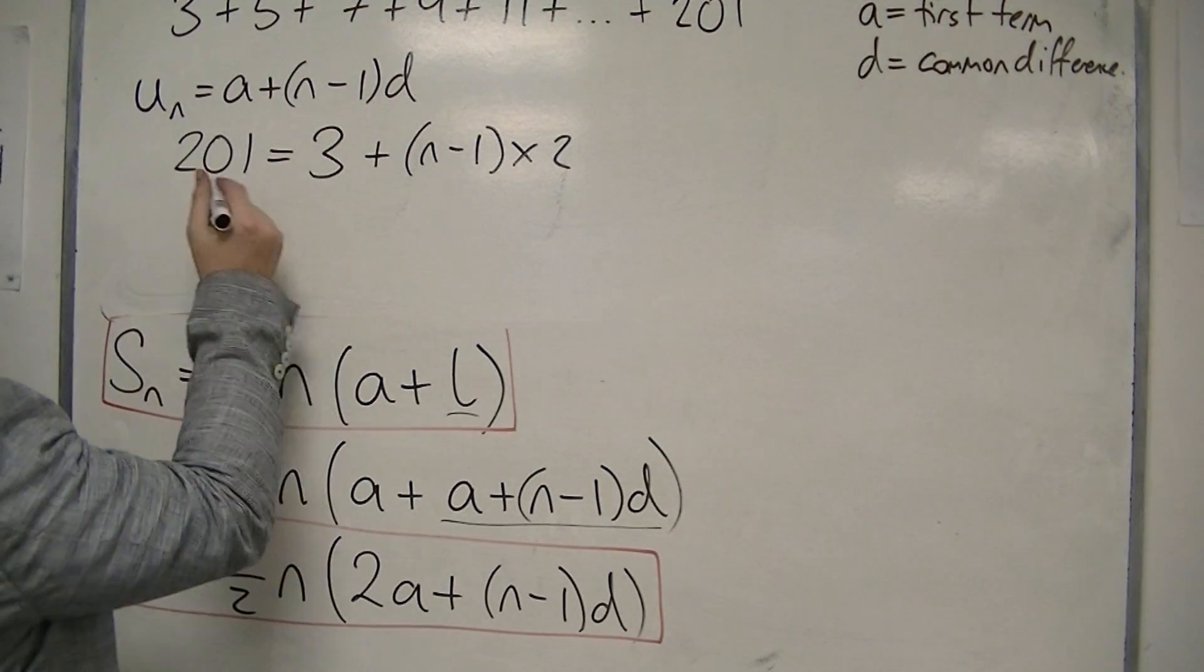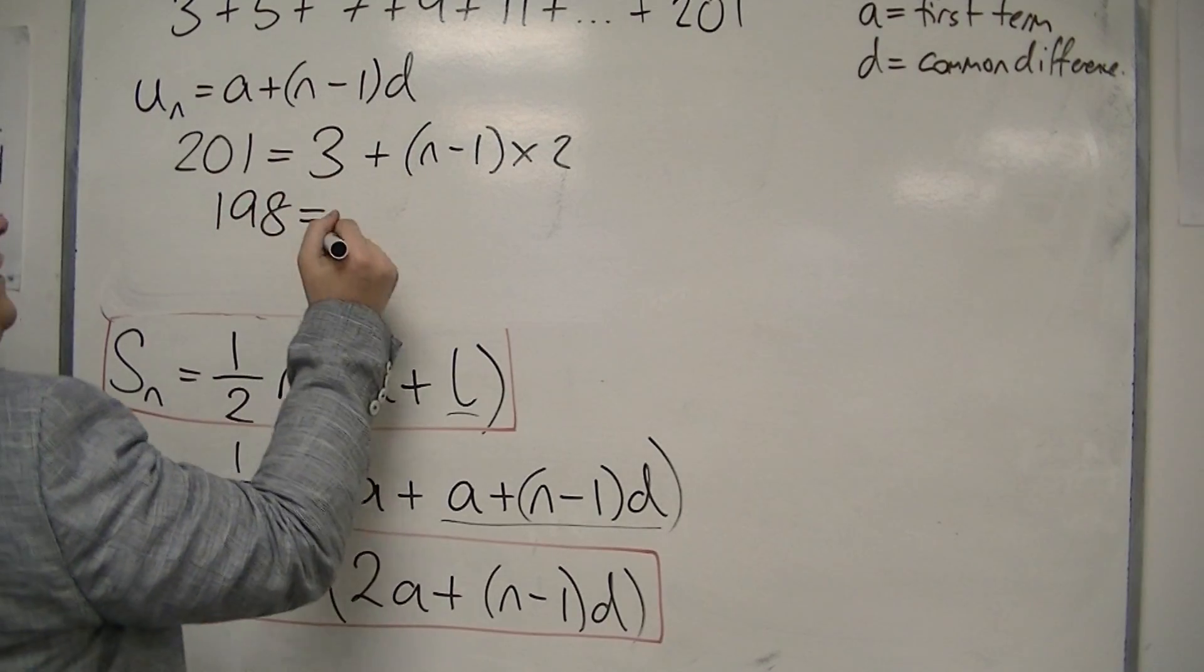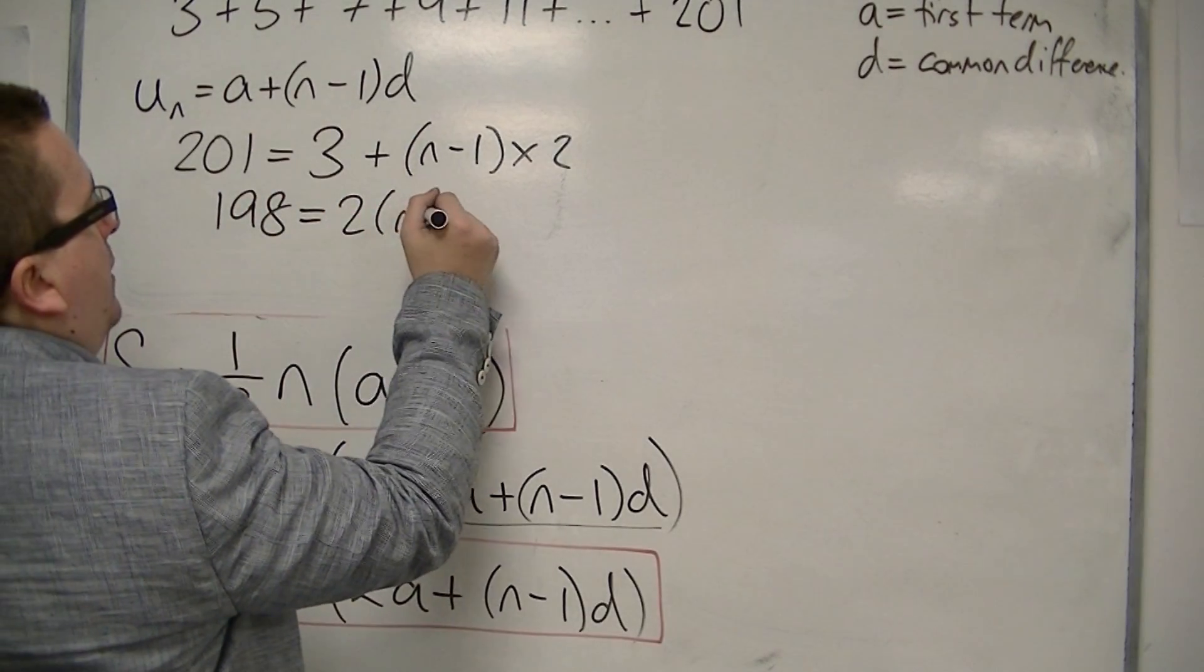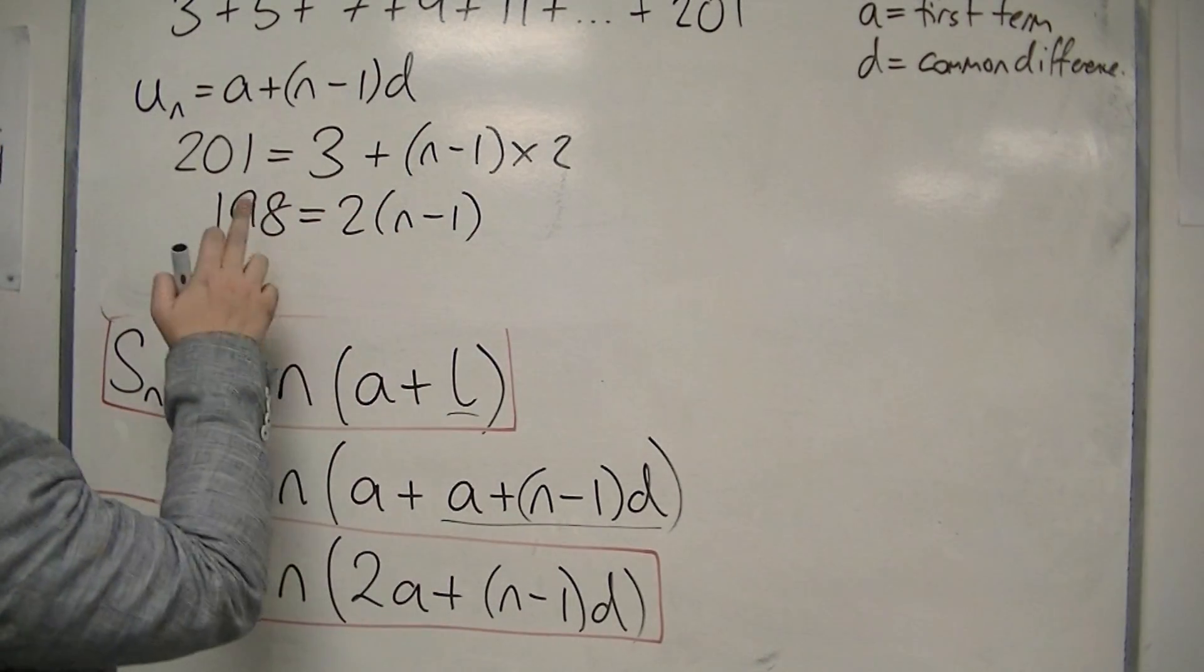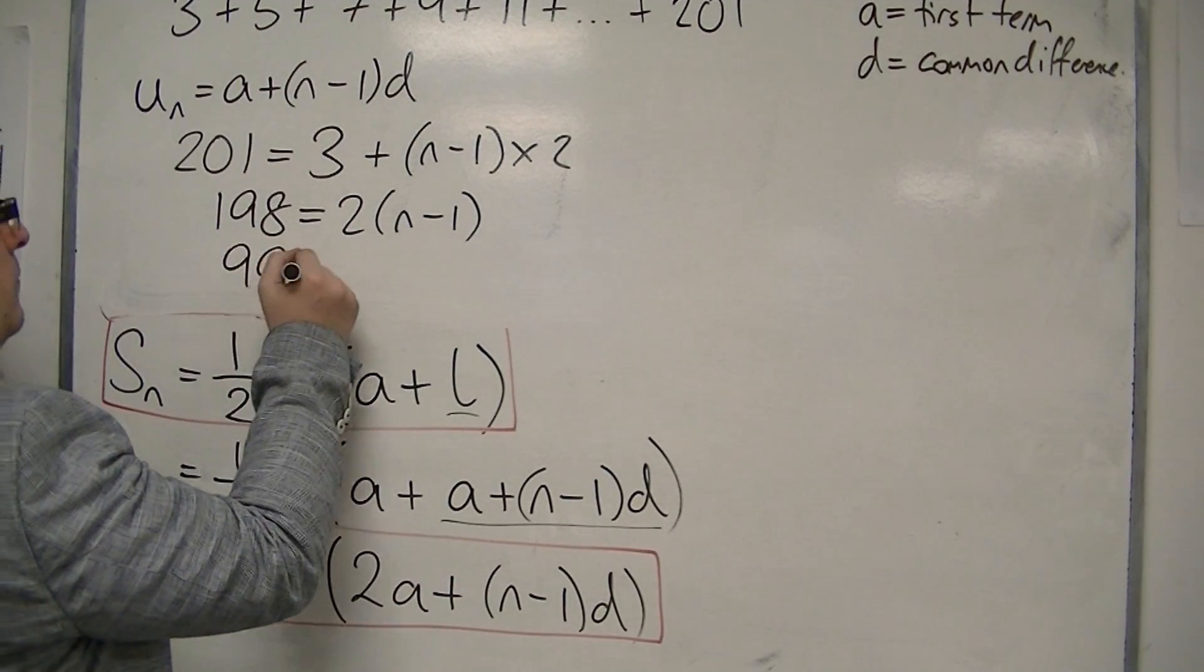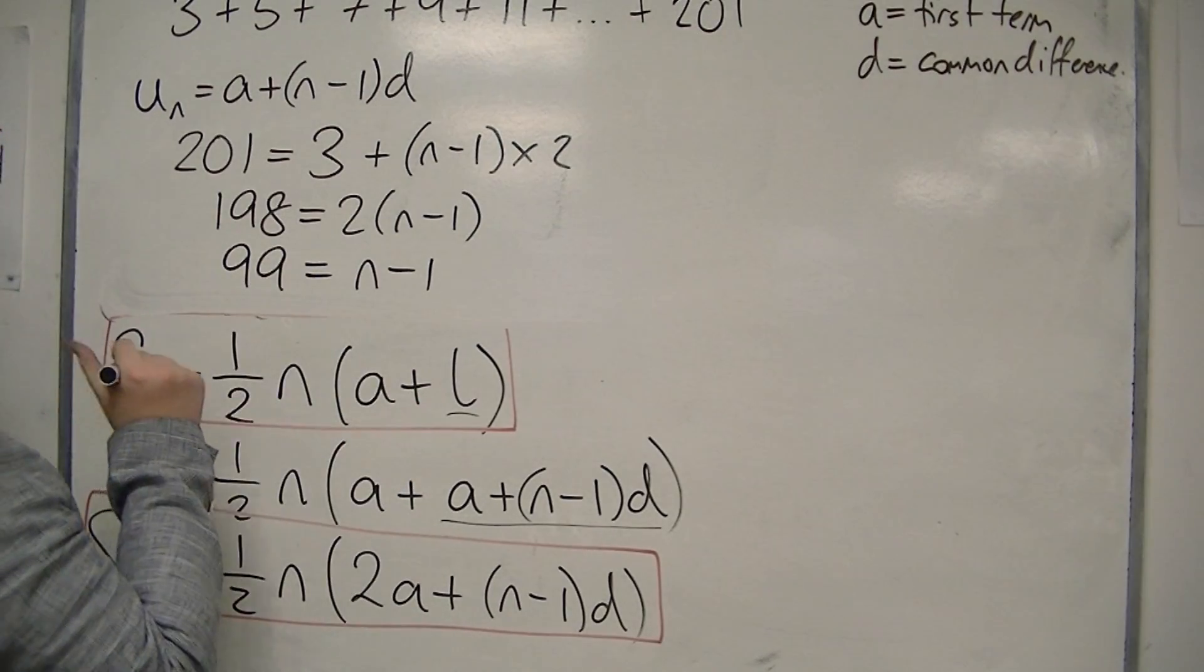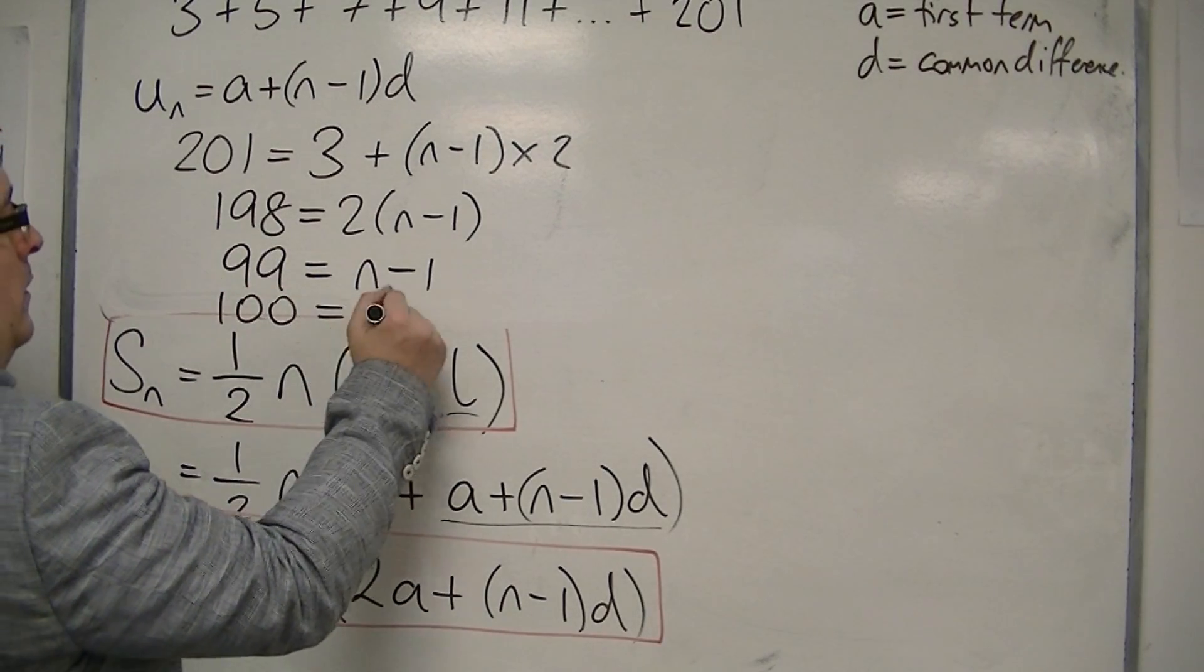Take 3 from both sides. So that's 198 is equal to 2 lots of N minus 1. Half of 198 is 99. And then add 1 to both sides. So I actually have 100 terms.